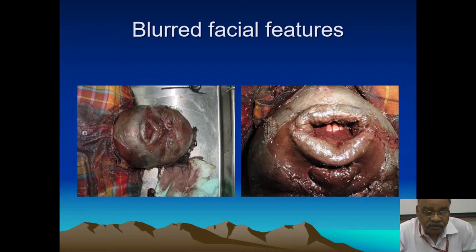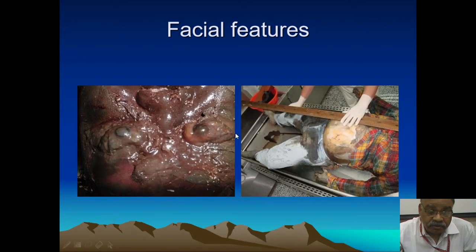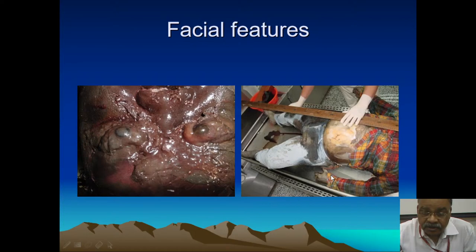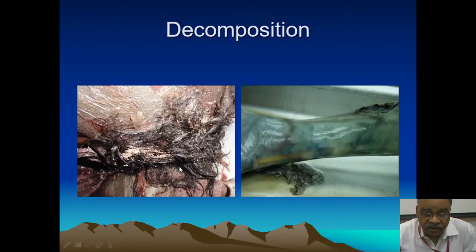In a closer view, one can appreciate softened eyeballs on both sides, blister formation, and decomposition of tissue. In estimating height, a long scale is used. You can see peeling of skin — even hairs fall after three to five days, and the body will be bald. This is called marbling — when the vessels are stained due to decomposition of blood, you will find marbling of the tissue.